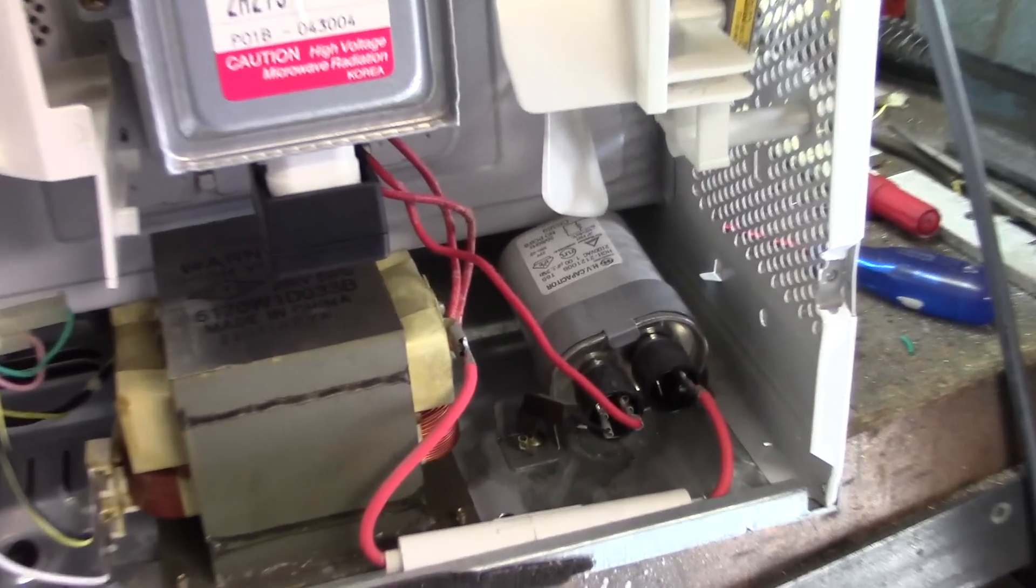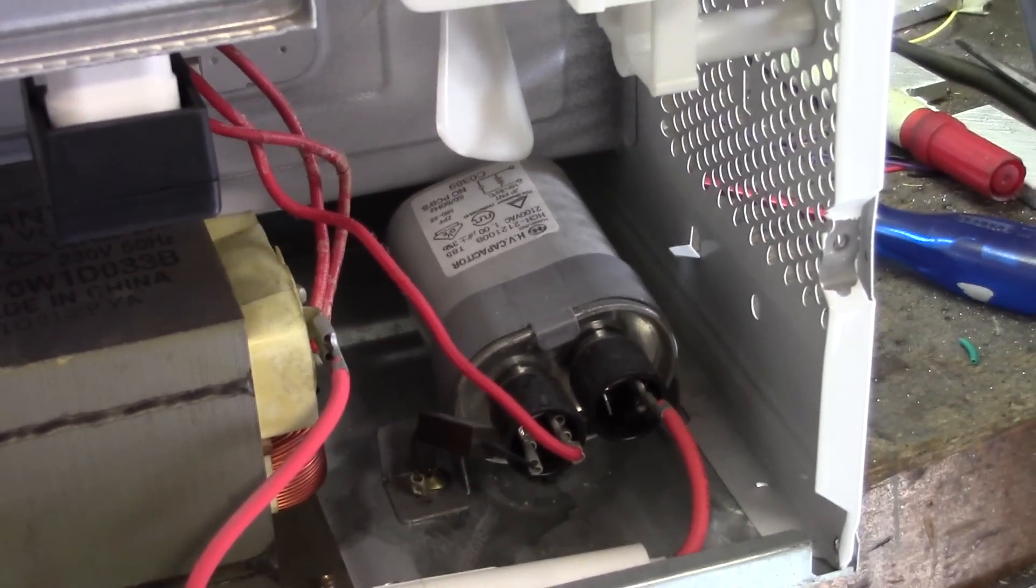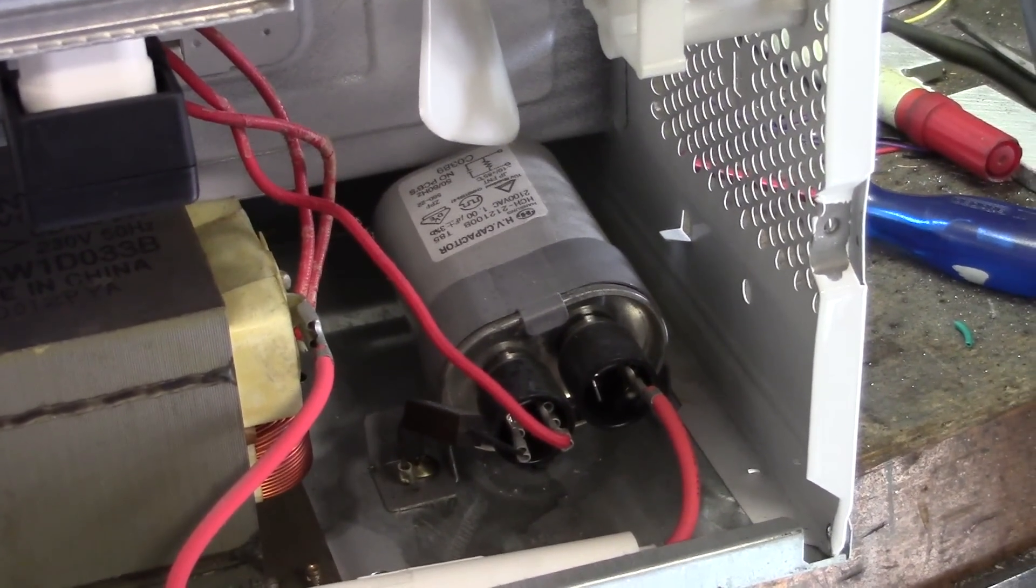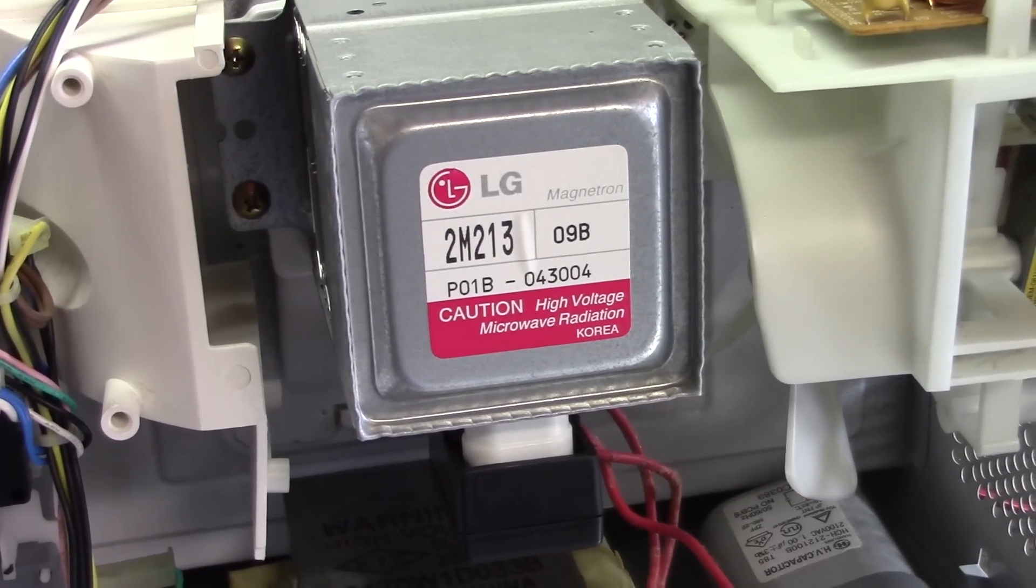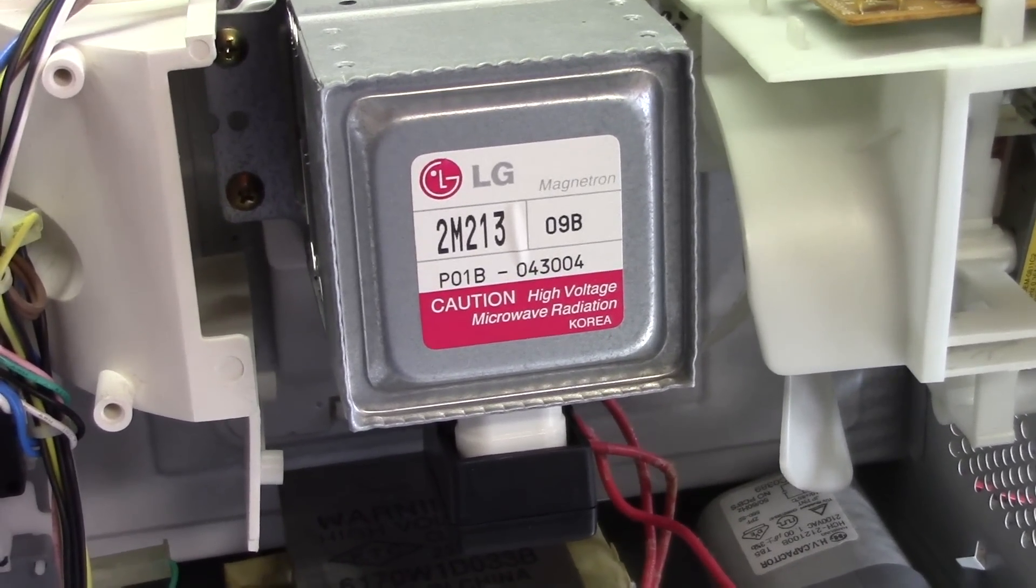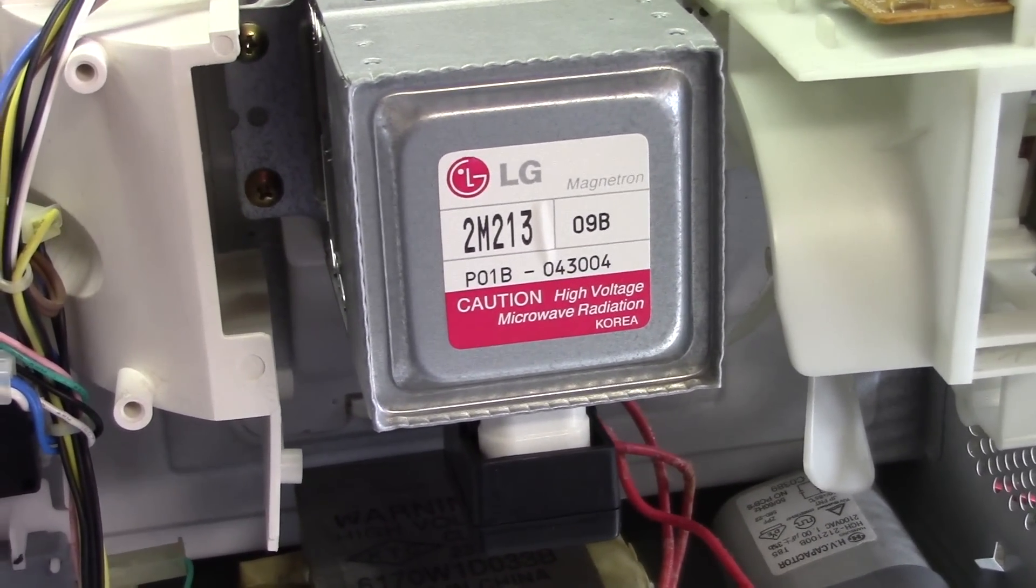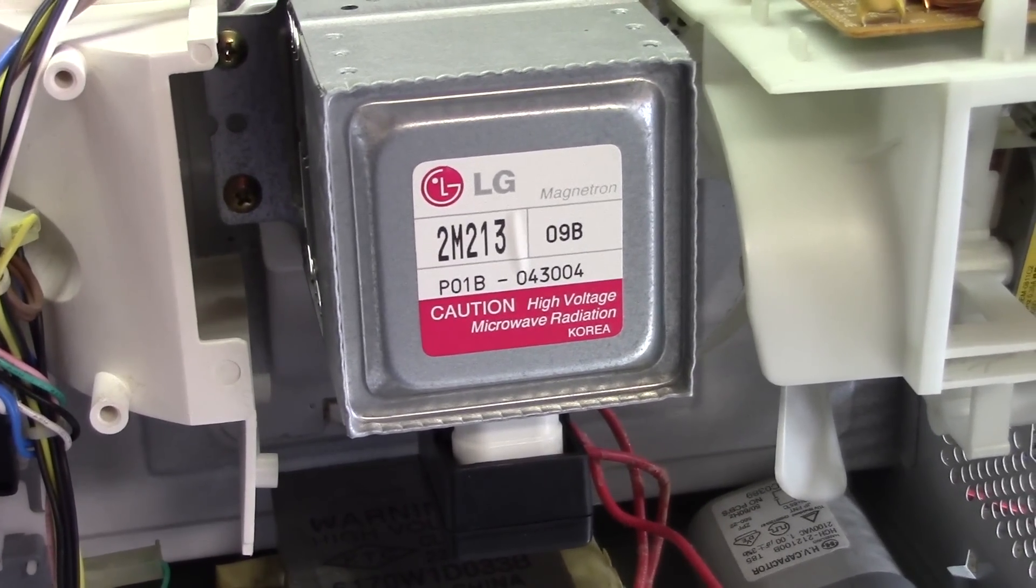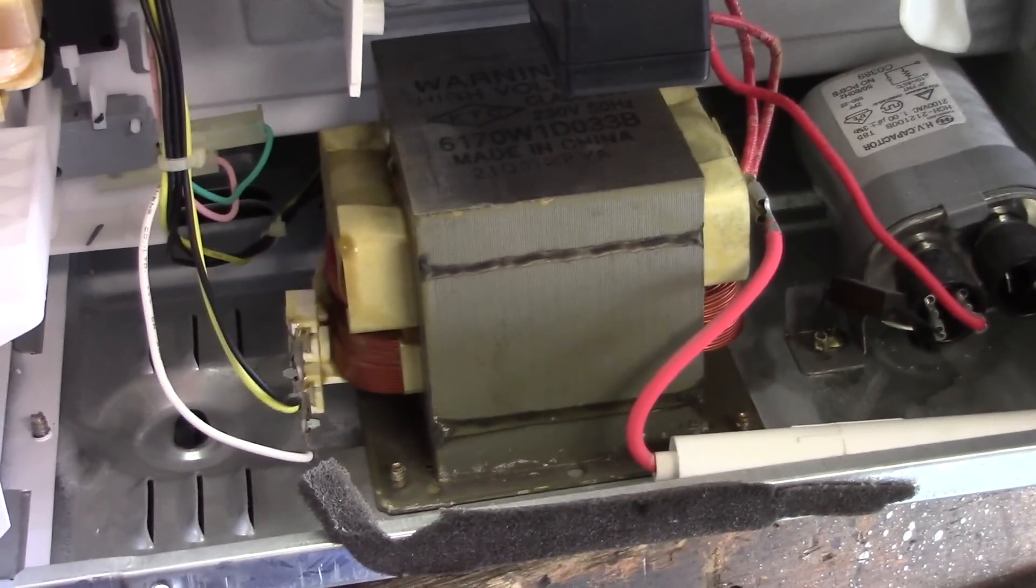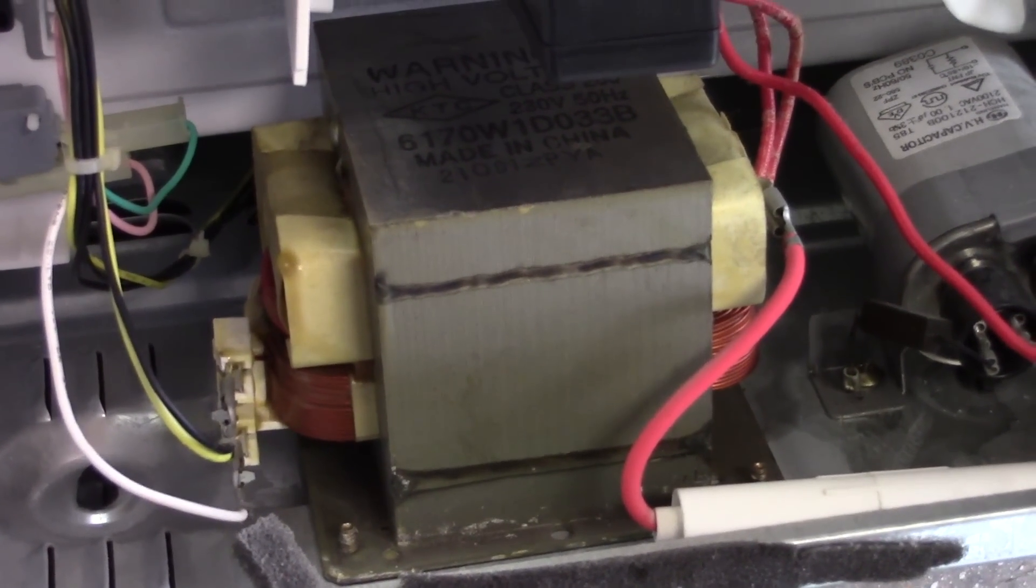Now that we've opened it up we can take a look at all the cool stuff inside. Down here there is a high voltage capacitor and this is the magnetron which is the device that generates microwaves. Don't worry when the oven is turned off the magnetron doesn't produce any radiation. Then down here we've got the microwave oven transformer.